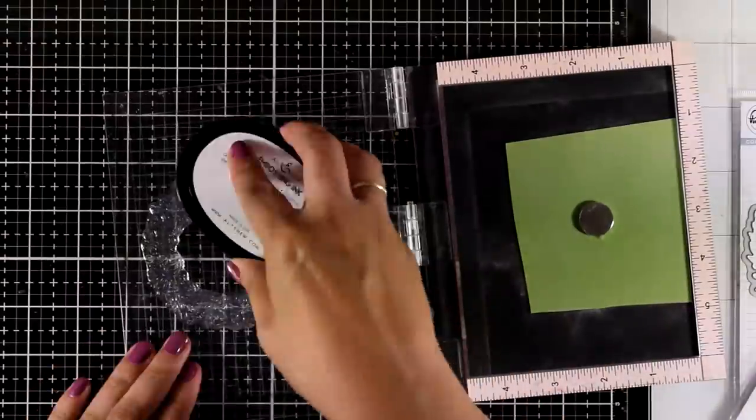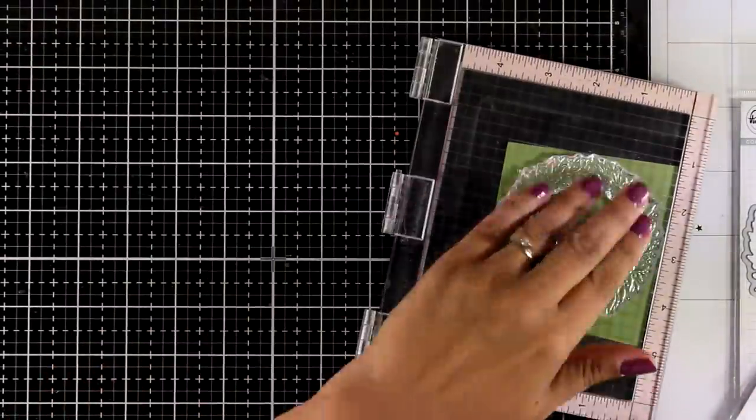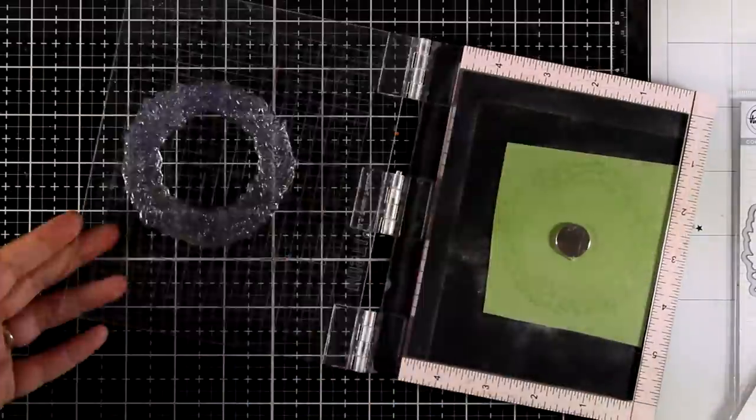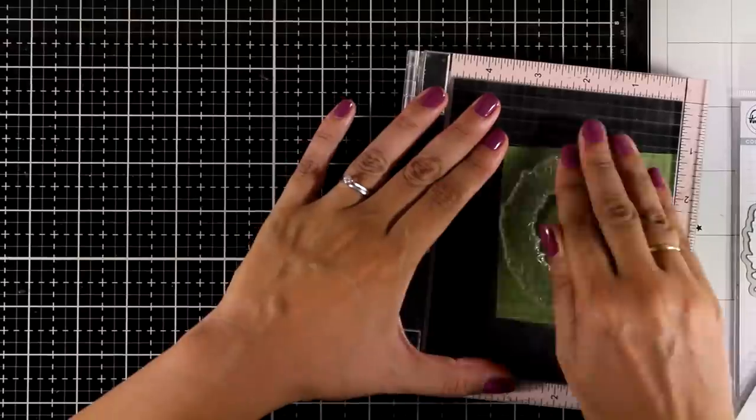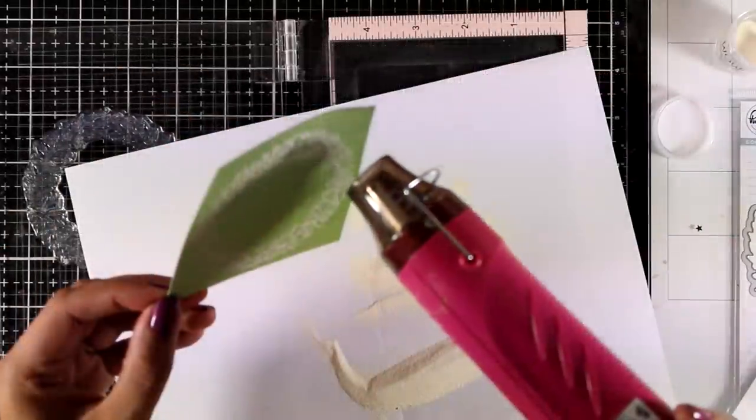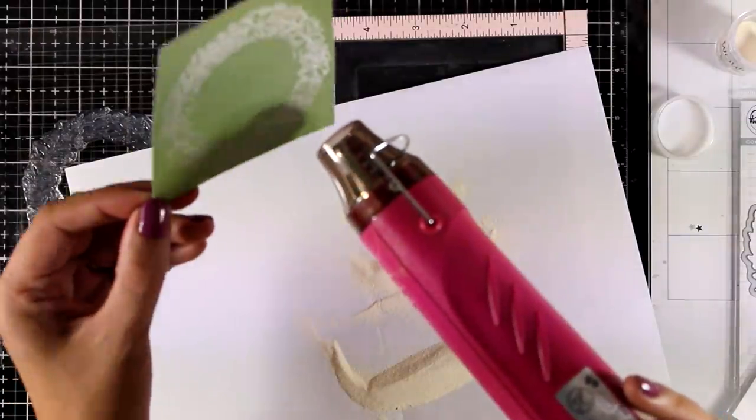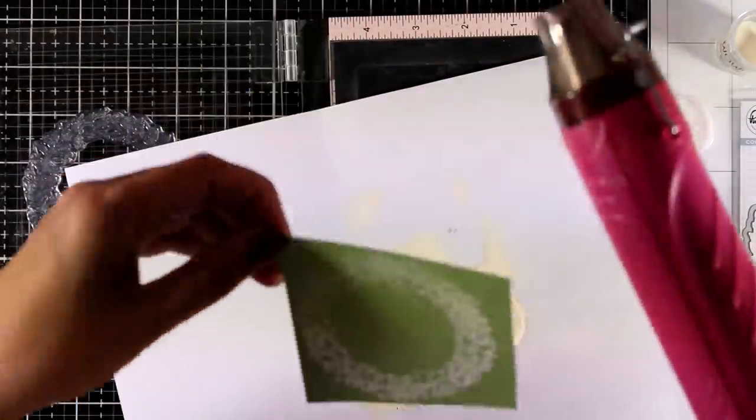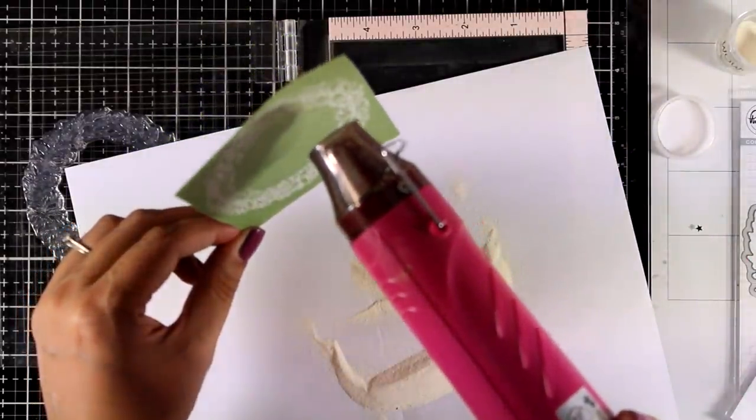Let's move on to the final card for today. I'm using the wreath from the seasons greetings stamp set. I'm going to stamp that with embossing ink on green cardstock and I'm going to emboss it with white embossing powder. Of course you can stamp the wreath and color it in with your favorite medium. I'm showing you a quicker way to use it which is actually the way to go if you want to mass produce cards for Christmas.